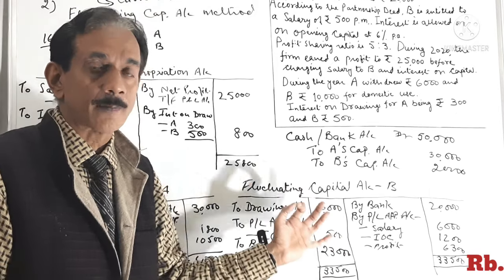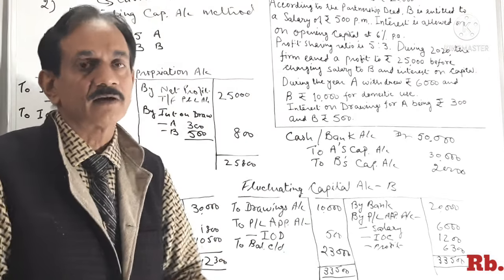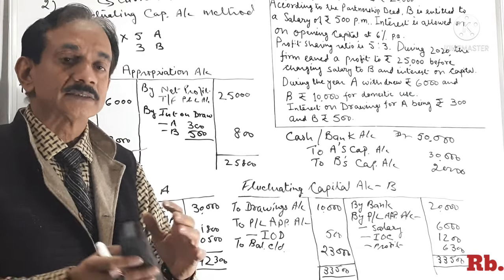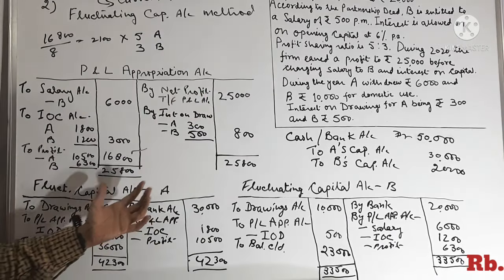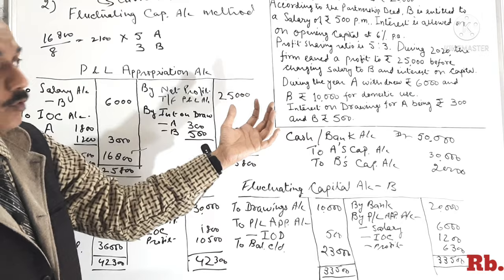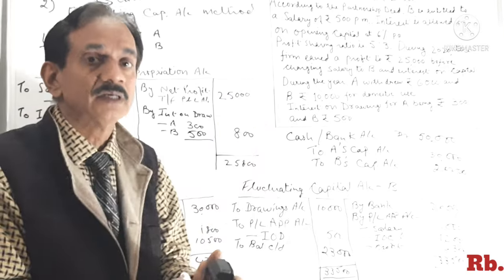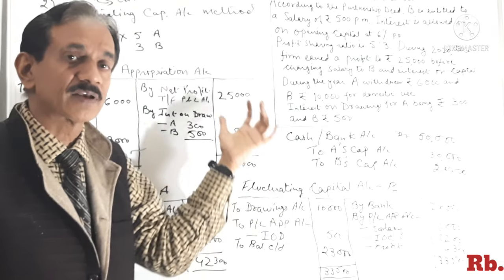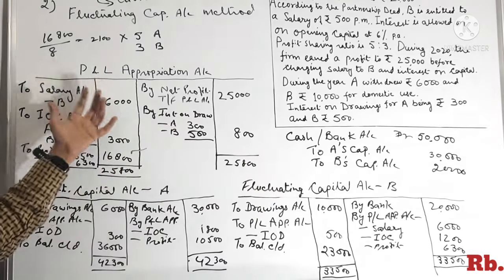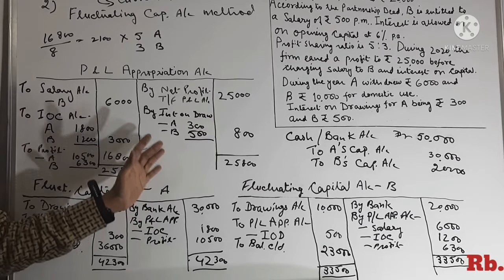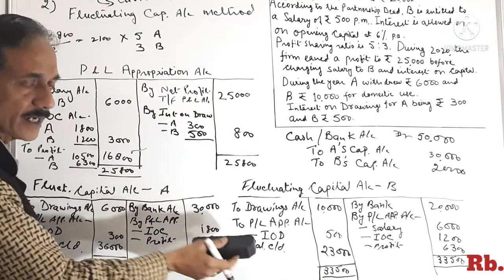Ab hum aate hain Fixed Capital Account Method ke upar. Students, agar aapki illustration mein kuch specify nahi kiya hua ki kis method ko adopt karna hai, tab aap hamesha Fluctuating Capital Account Method ko hi adopt karein, kyunki yeh simplest method hai. Lekin agar question mein specifically likha hai ki capital accounts are maintained on Fixed Capital Account Method basis, tab aapko Fixed Capital method banana hai. Isme P&L Appropriations Account same rahega — koi change nahi hai.